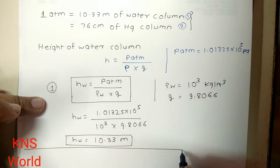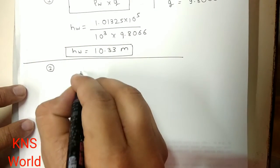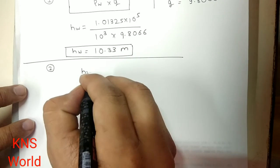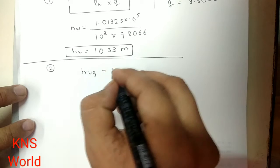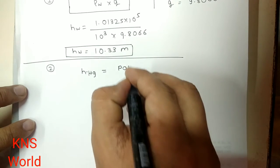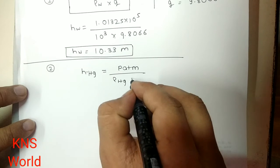After that, if we see the second case, that is for that we are using height H_Hg, that is mercury, is equal to P atmosphere upon the density of Hg into g.